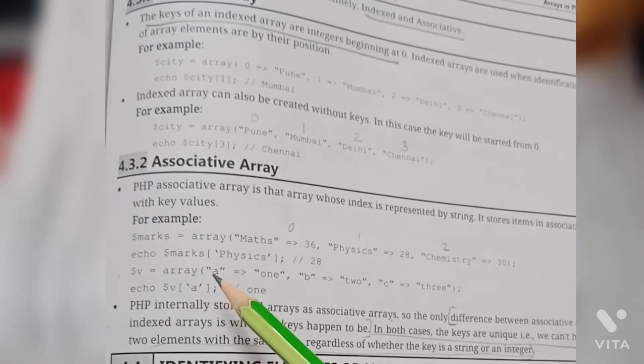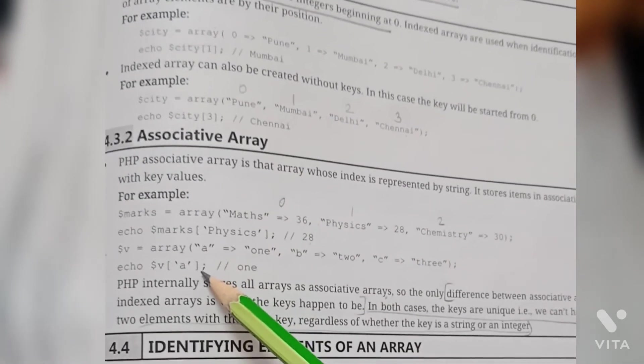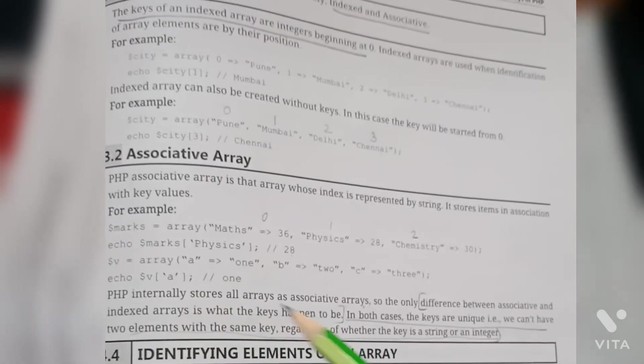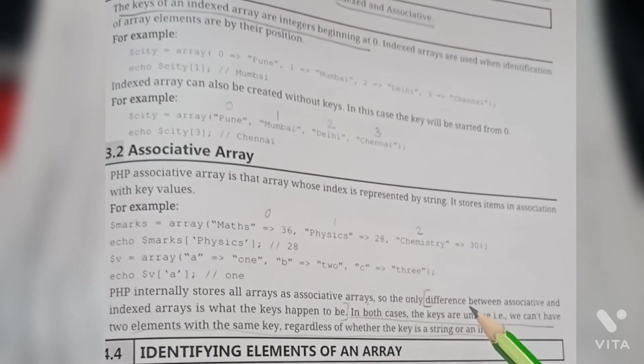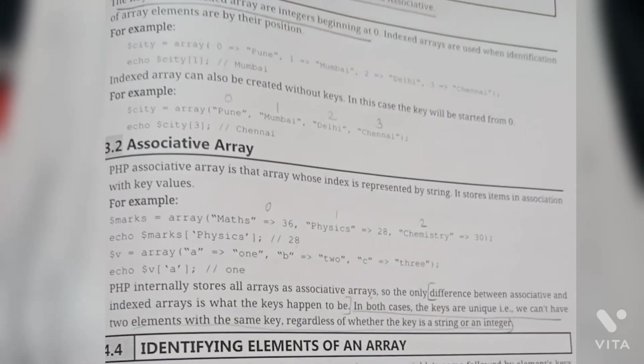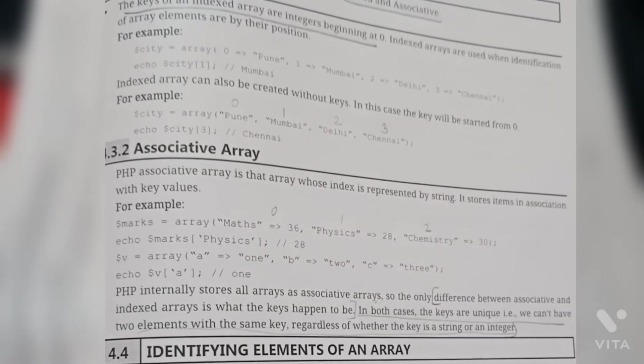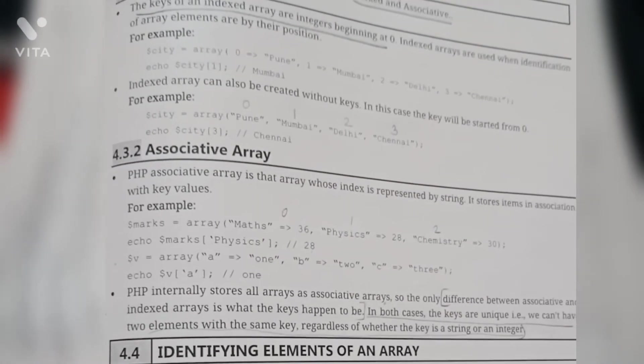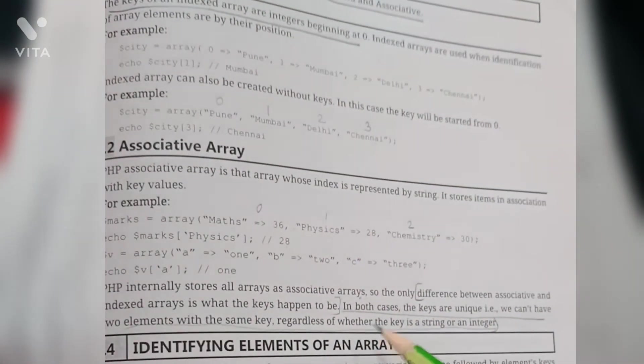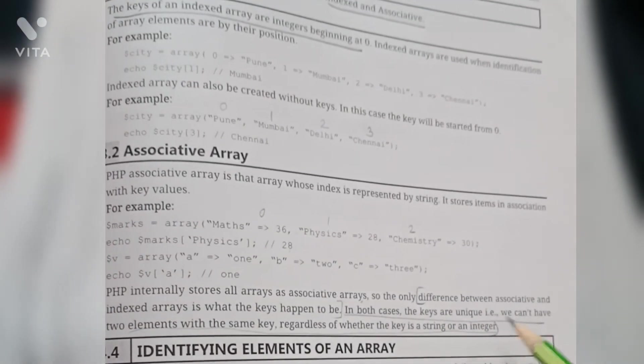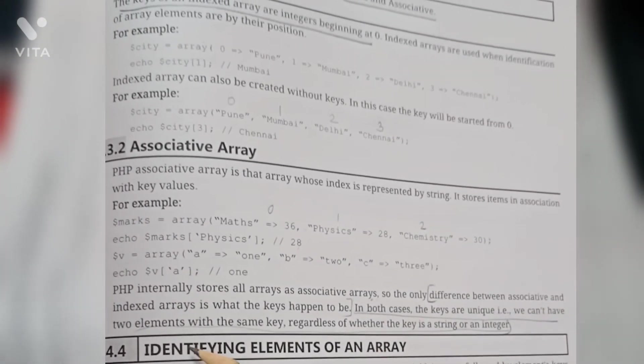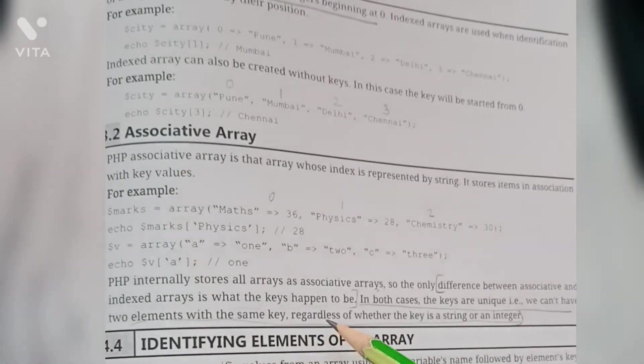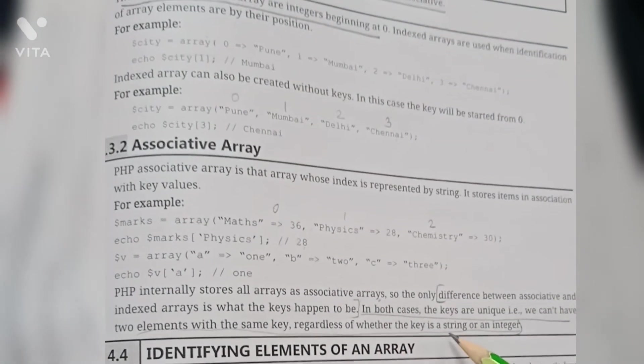This is another example of associative array. The difference between associative and indexed array is what the keys happen to be. In both cases, the keys are unique - that is, we cannot have two elements with the same key, regardless of whether the key is a string or an integer.